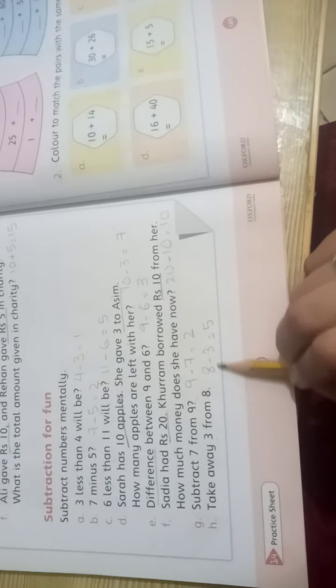Subtract 7 from 9: 9 minus 7 equals 2. Take away 3 from 8: 8 minus 3 equals 5.